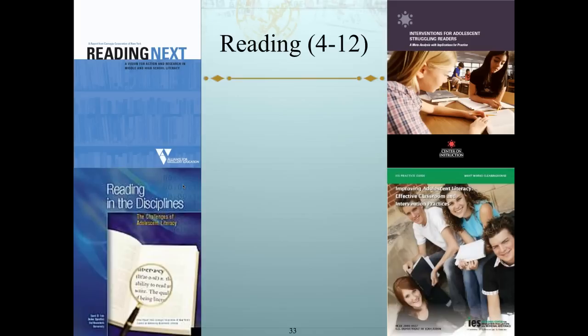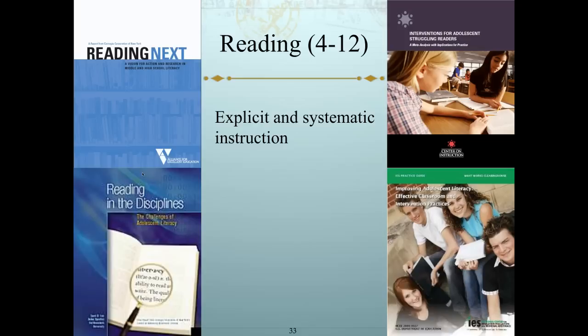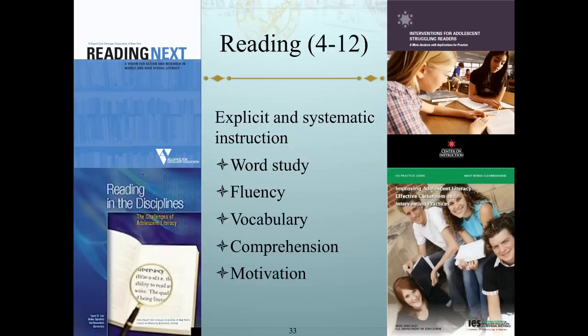To recap motivation: interesting topics and lots of student discussion where students are actively engaged in groups — but only once they have the skills. To recap the full presentation: best practices based on four research syntheses all hinge on explicit and systematic instruction, and focus on the five elements — word study, fluency building, vocabulary, comprehension, and motivation. A solid adolescent literacy program should have all five elements covered, meeting the needs of students in grades 4 to 12.